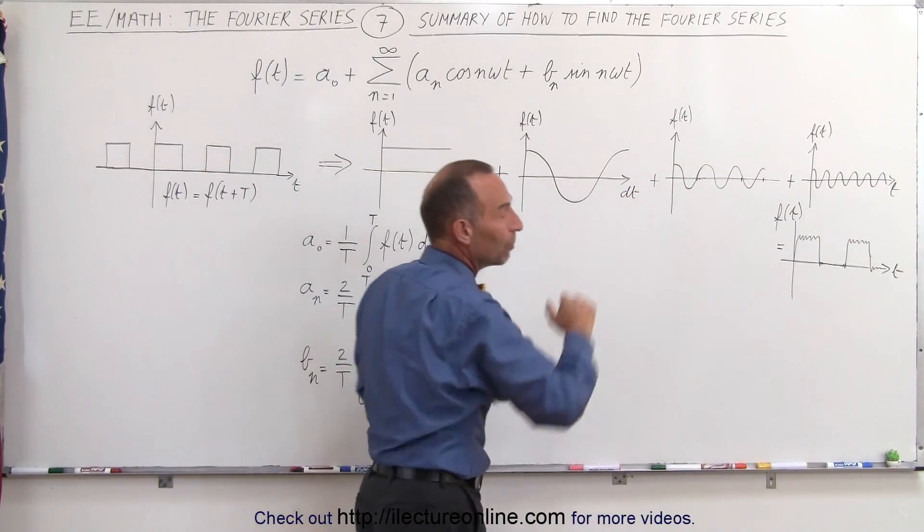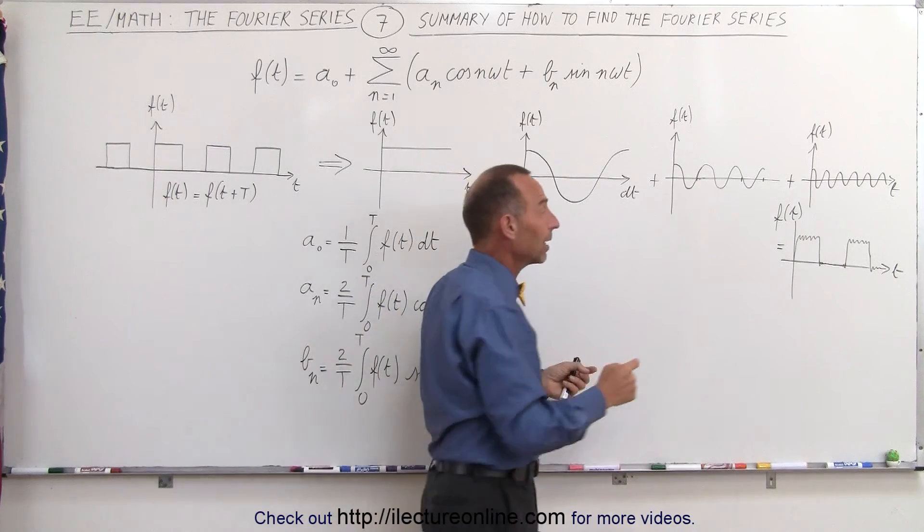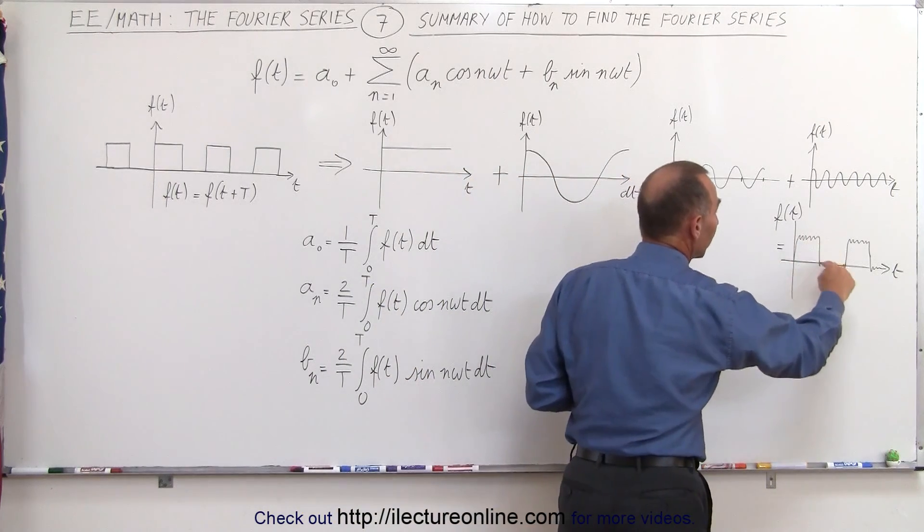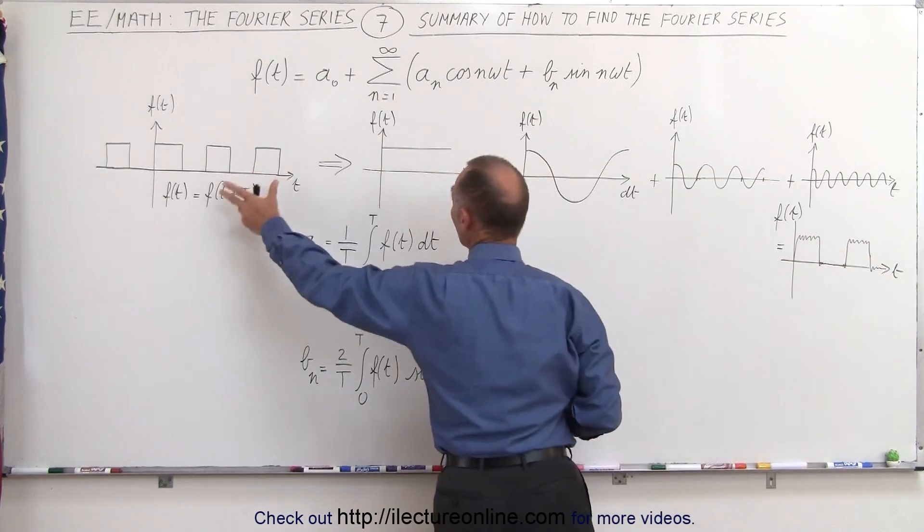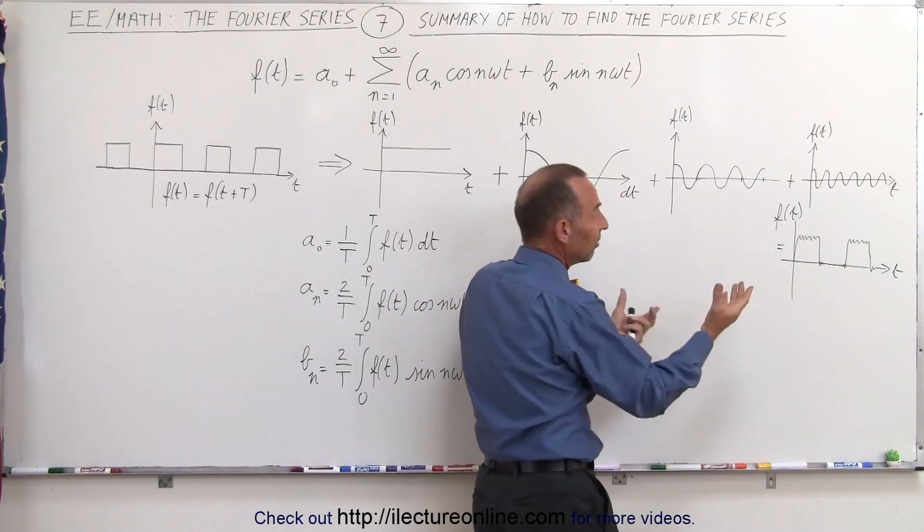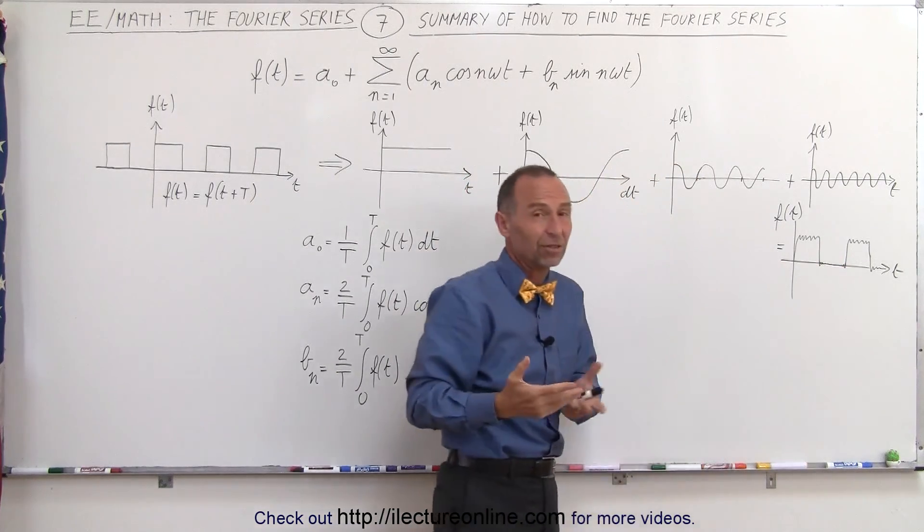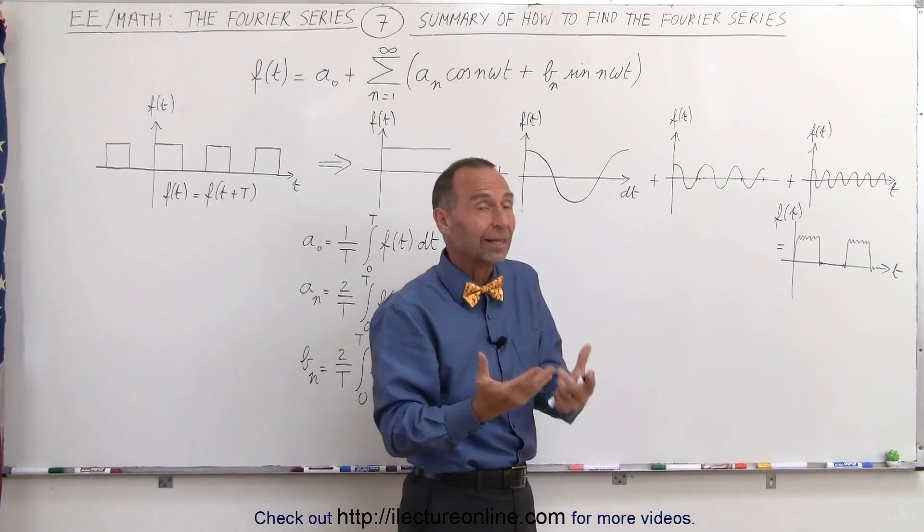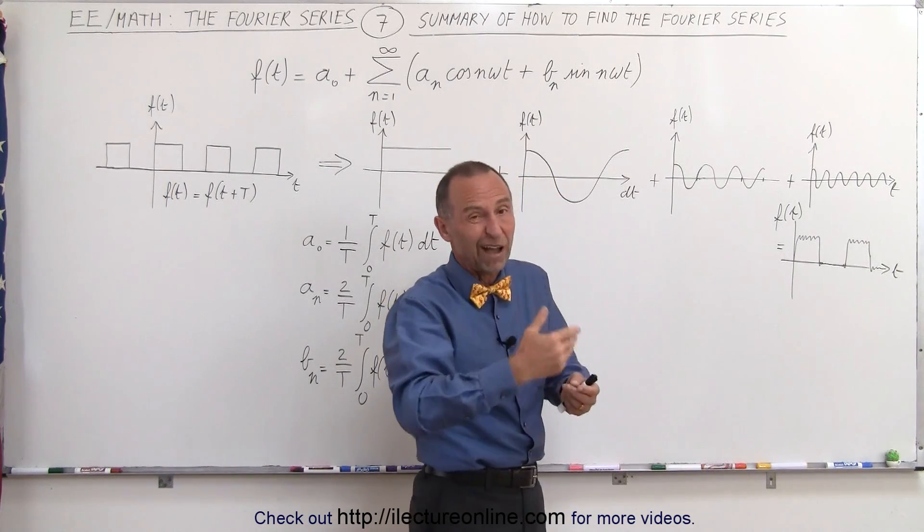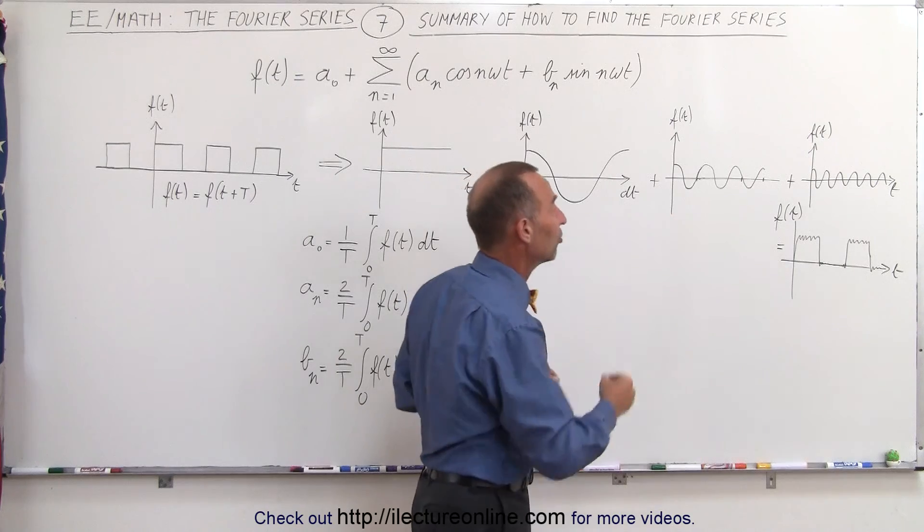When you add up a certain number of them you eventually will end up with something that very closely resembles the original periodic function, except in this case it will simply be a sum, not an infinite sum, but in practicality it's good to have at least five or six or seven terms of the summation.